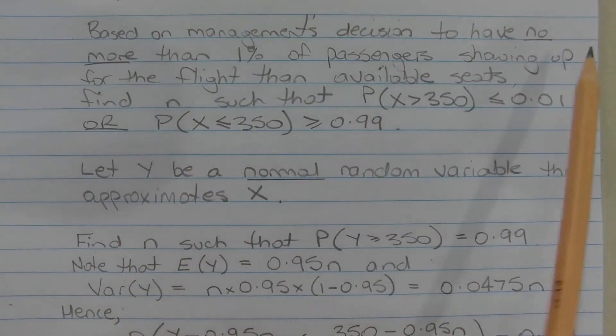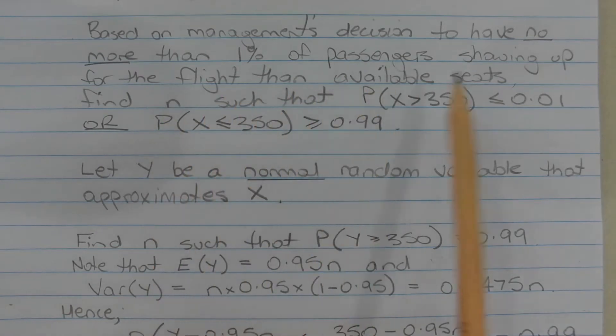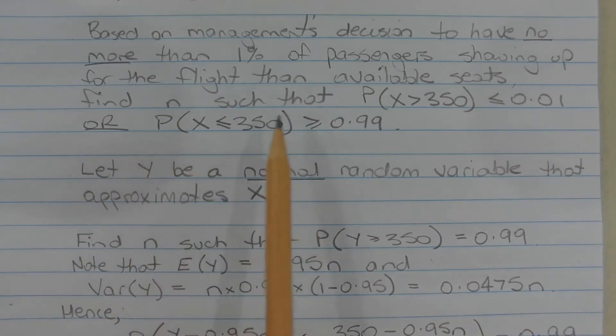Based on management's decision to have no more than 1% of passengers showing up for the flight than available seats, we need to find N such that the probability that X is greater than 350 is less than or equal to 0.01, or the probability that X is less than or equal to 350 is greater than or equal to 0.99.